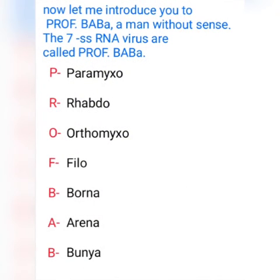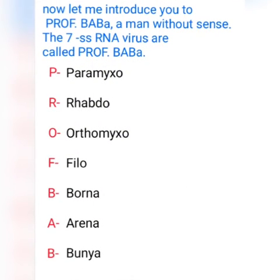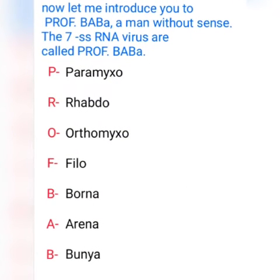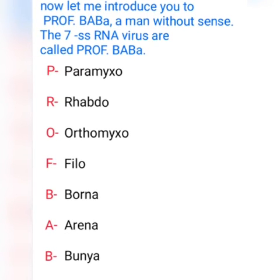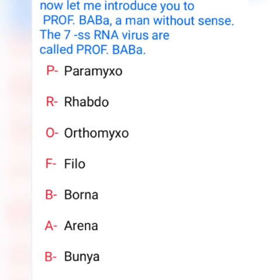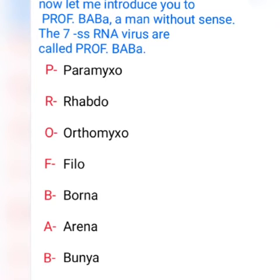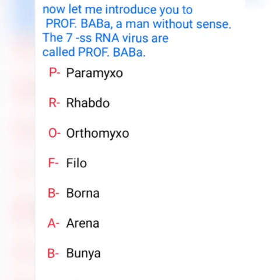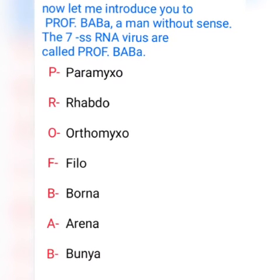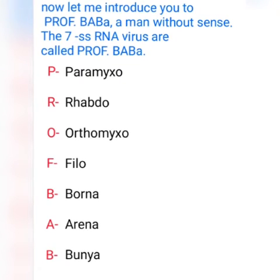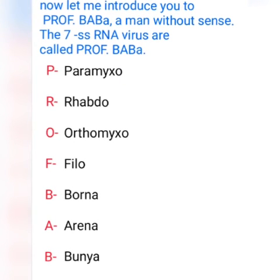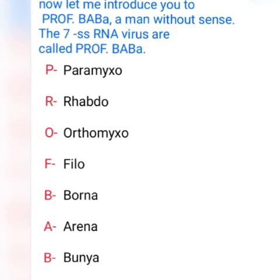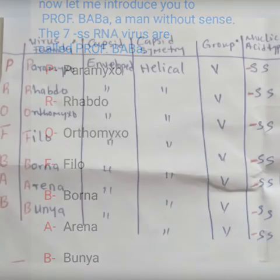Now let me introduce you to Professor Obaba, a man without sense. The 7 negative sense RNA are called Professor Obaba. Professor Obaba stands for: Paramyxo, Rhabdo, Orthomyxo, Filo, Bona, Arena, and Bunya.